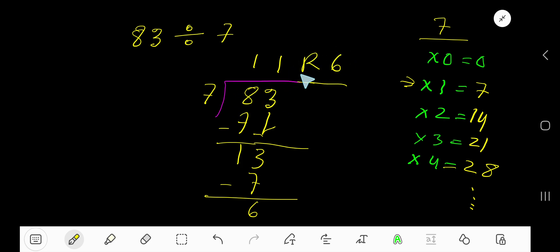11 remainder 6, this is the answer. But if you want to write your answer in decimal form, what will you do? Just convert this whole number into decimal number. Take decimal and you're allowed to take any number of zeros. Bring down the first zero, but before this zero there is a decimal. Decimal must come to the quotient directly.